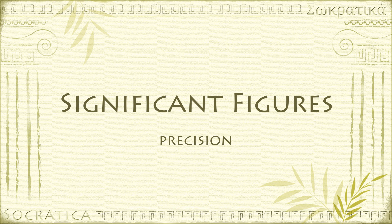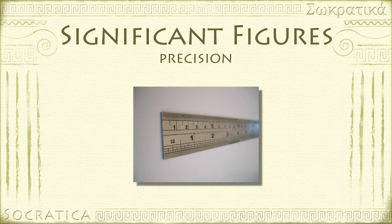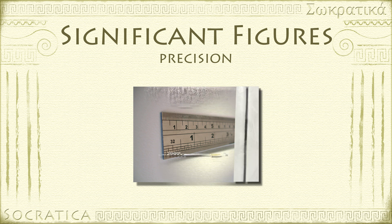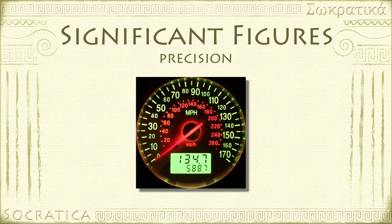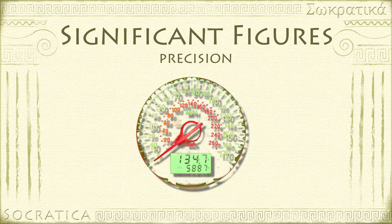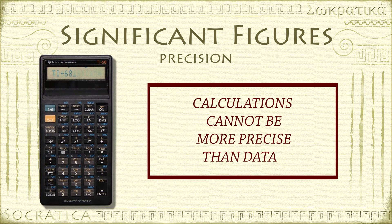Significant figures tell us about the precision of a measurement, instead of its magnitude. When you make a scientific measurement, you have to report your data using the correct number of significant figures, which gives an indication of how precise your measurement was. You can't write down data that's more precise than the tools you use, and you can't report an answer that's more precise than the data you started out with.